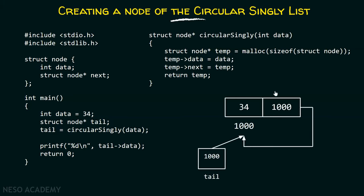This is how the node looks like. Suppose the address of this node is 1000 — so 1000 will get stored in the next part as well. The tail pointer is pointing to this node. This is the node of the Circular Singly Linked List.